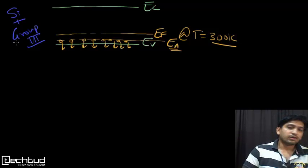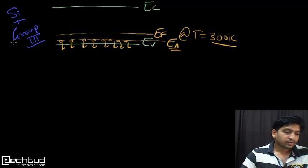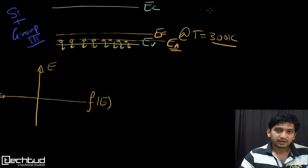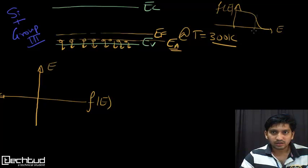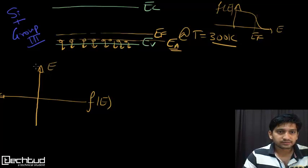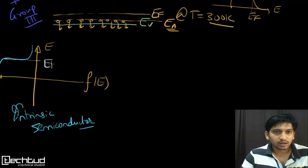Now let us see how the Fermi energy level can be used mathematically to compute the electron density. We plot F(E) with respect to E — we have just rotated the axes compared to the earlier plot. For an intrinsic semiconductor, with this new orientation the Fermi-Dirac distribution plot shows EF_i (the intrinsic Fermi level) between the conduction band EC and valence band EV.